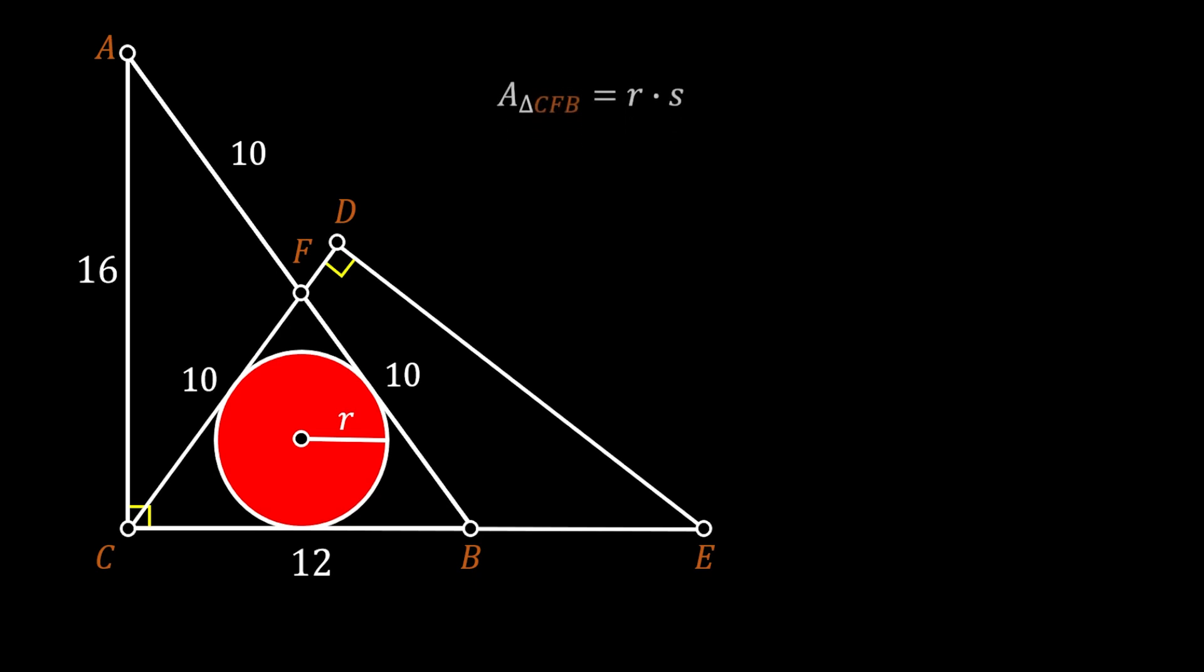And that formula states that the area of the triangle, in this case triangle CFB, must be equal to the radius of the inscribed circle times the semi-perimeter of this triangle.